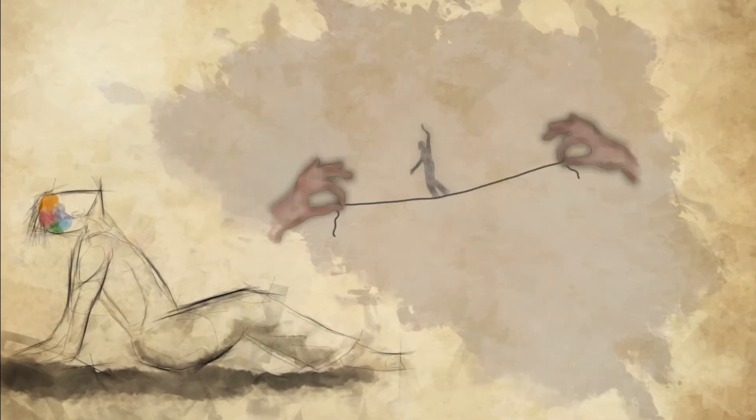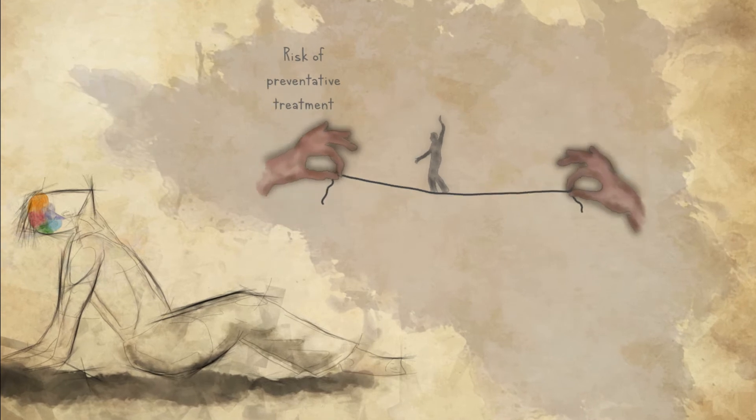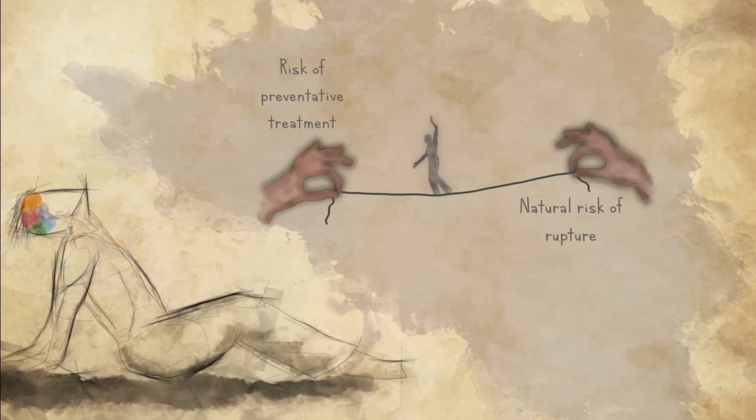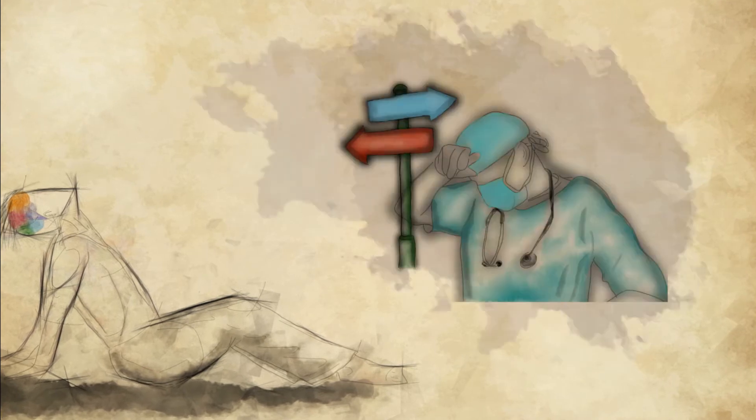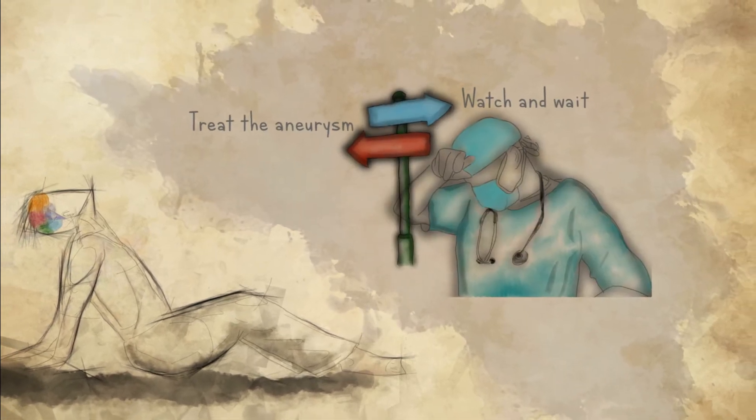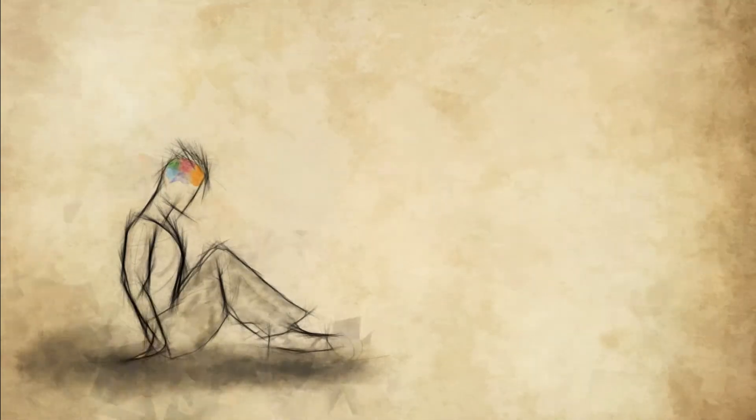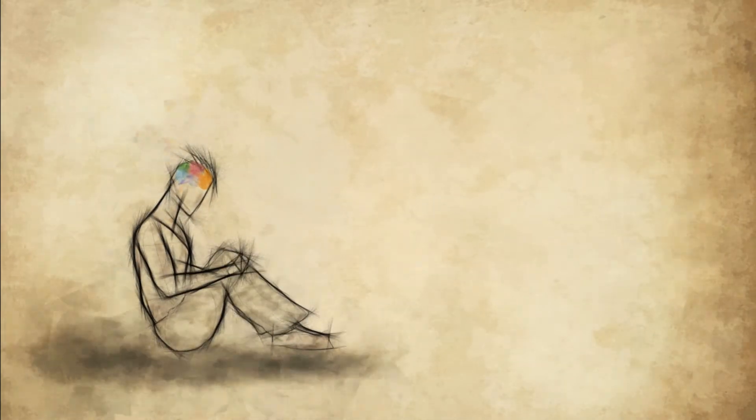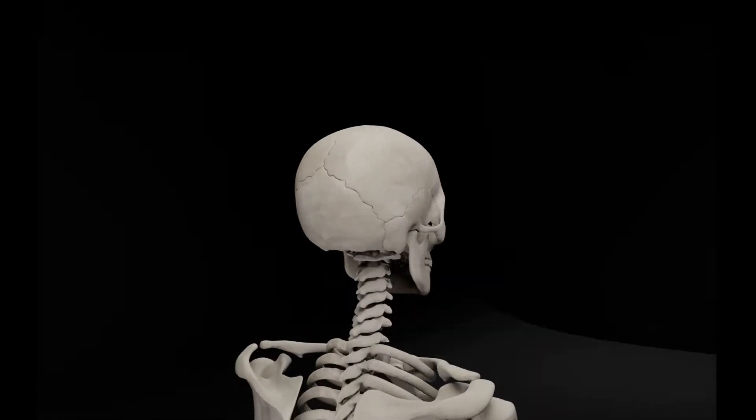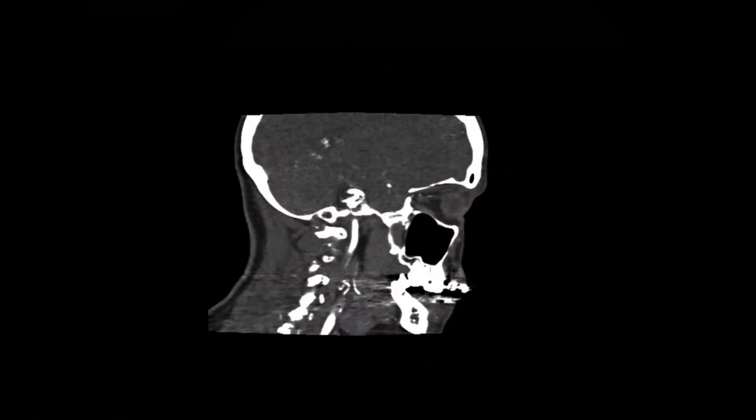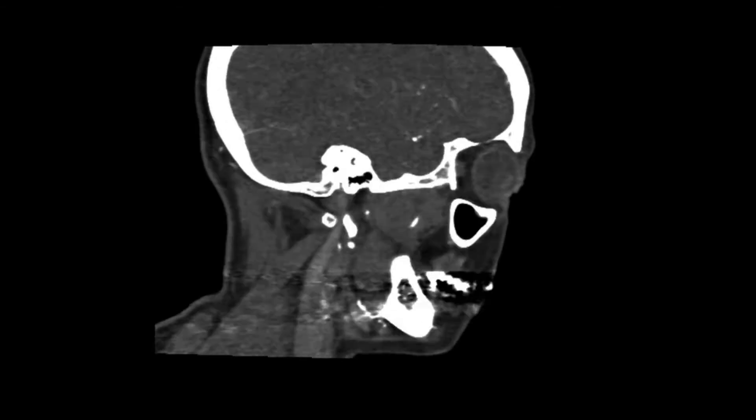Since a large number of aneurysms never rupture, the risk associated with preventative treatment can often exceed the natural risk of rupture. Clinicians and patients must decide whether to treat the aneurysm or to watch and wait. How can we know which aneurysms will rupture? Modern medical imaging and simulation techniques may help us get closer to finding a solution.